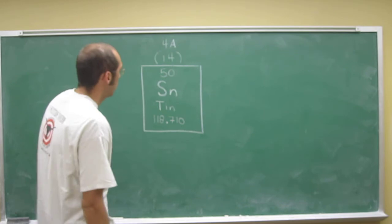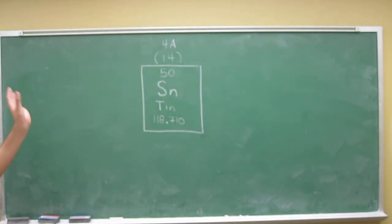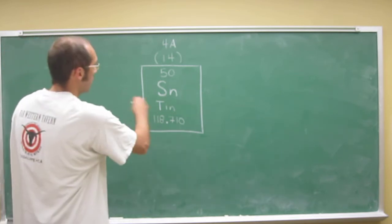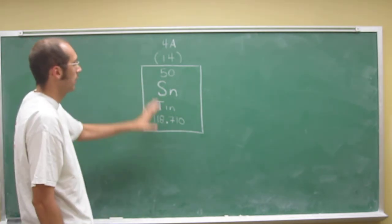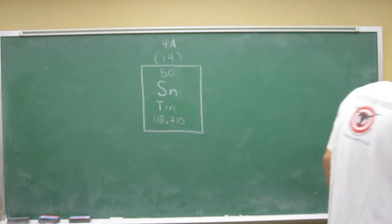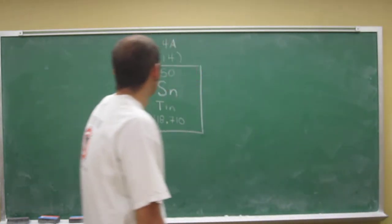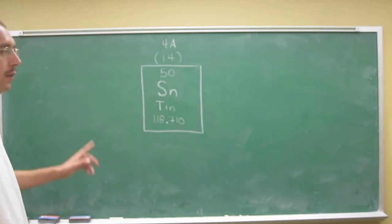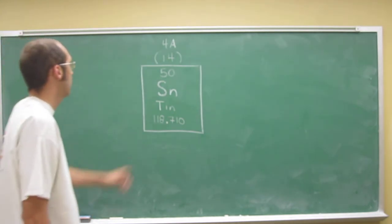Tin is Sn, and it has to do with the history of the naming, stannis and things like that. You'll hear that term stannis in referring to tin if you go on in chemistry. So the elemental symbol of tin is Sn.